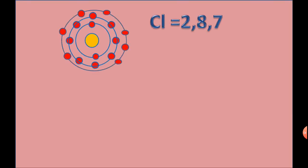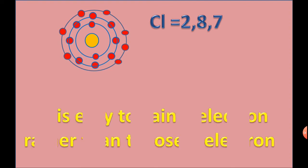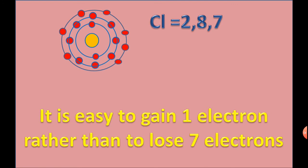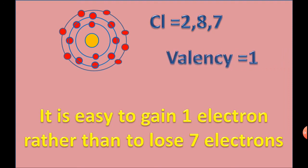Chlorine has electronic configuration 2,8,7. It is easy to gain 1 electron rather than to lose 7 electrons. Hence, the valency of Chlorine is equal to 1.